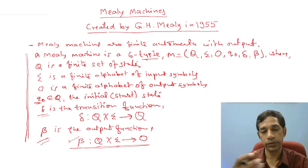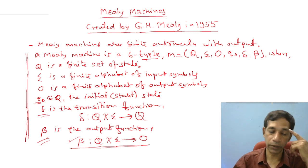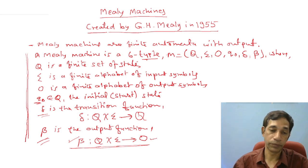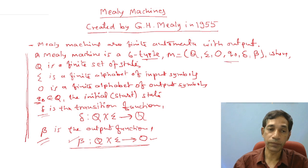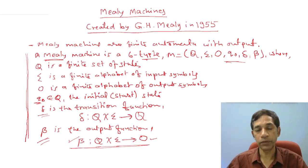From every state, for every input symbol, what character you are going to print is defined by β. You are in some state and have some input, and during the transition you are going to produce the output. In the case of the Mealy machine, we are not going to recognize some language, and hence the final state is not there. You only designate the initial state.